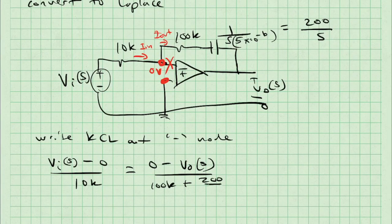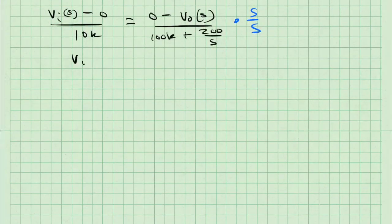On the other side of the equation, I am going to take the voltage drop across the series connection of the 100K resistor and the capacitor divided by that series connection. So I've got zero minus V0 of S over 100K plus 200K over S. To help myself out here, I'm going to multiply by S over S to clear the denominator of the fraction.